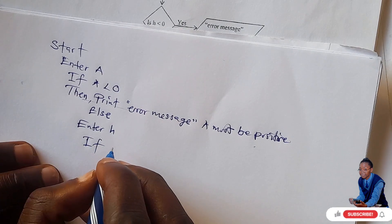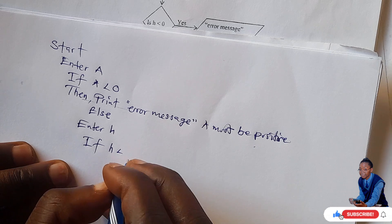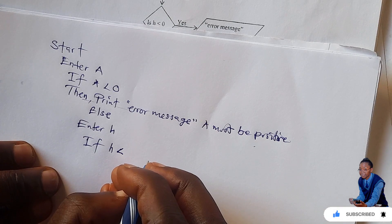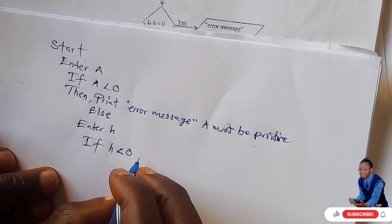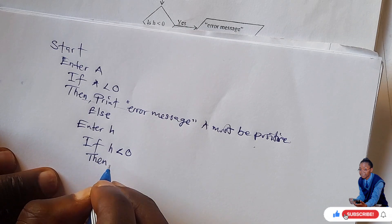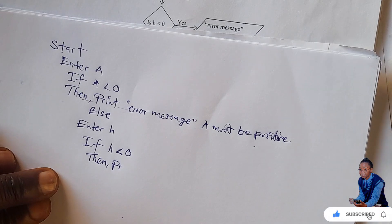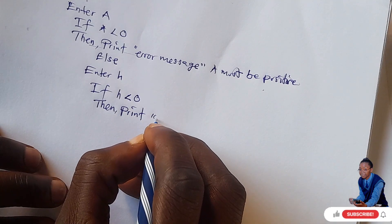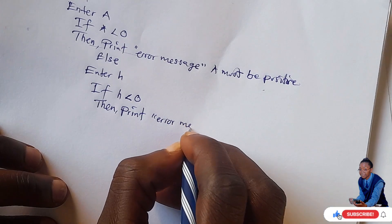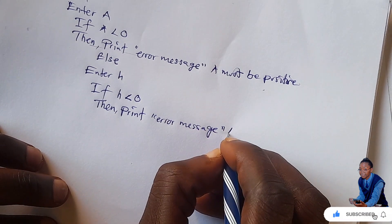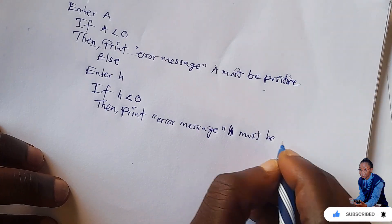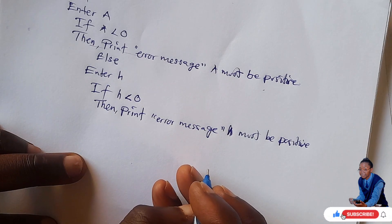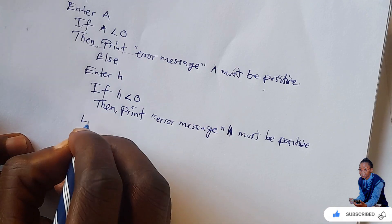If H is less than zero, then print error message: 'H must be positive'. Okay, if it's negative that's what you print. If it's positive, else — proceed.